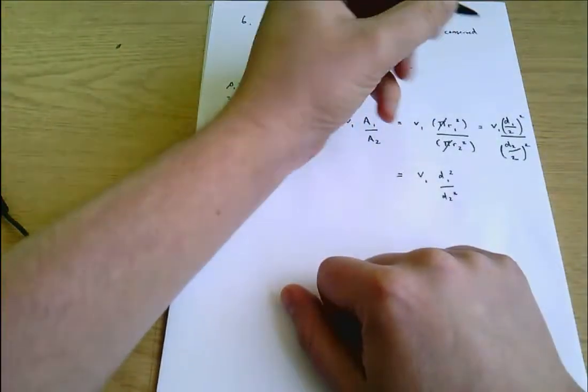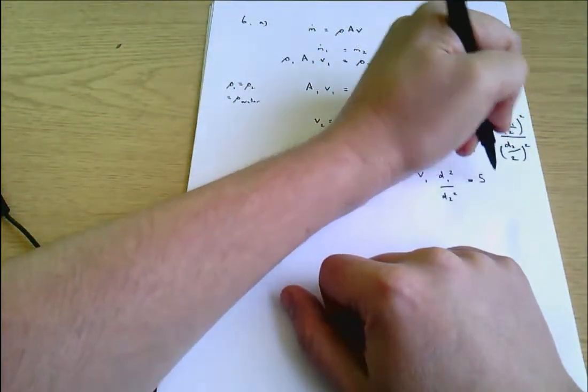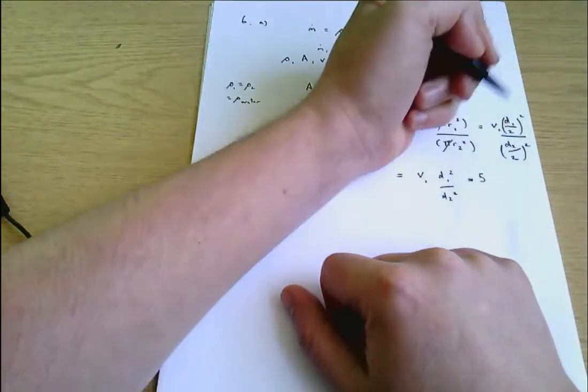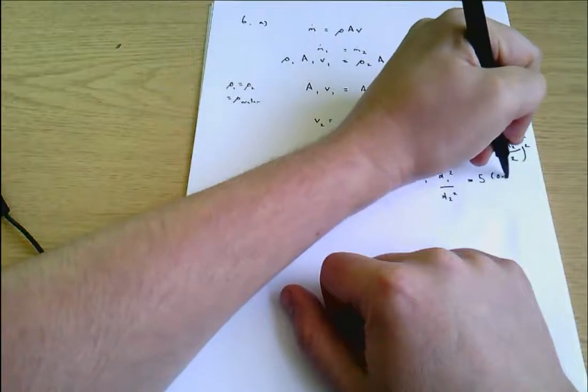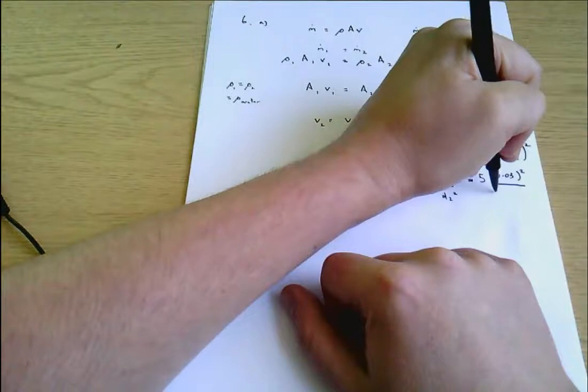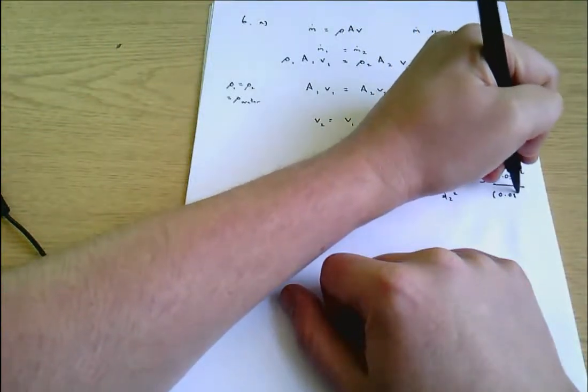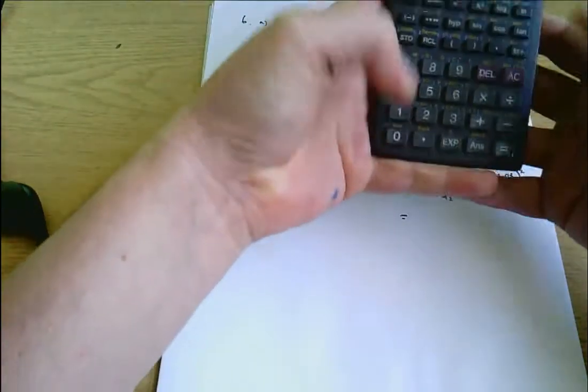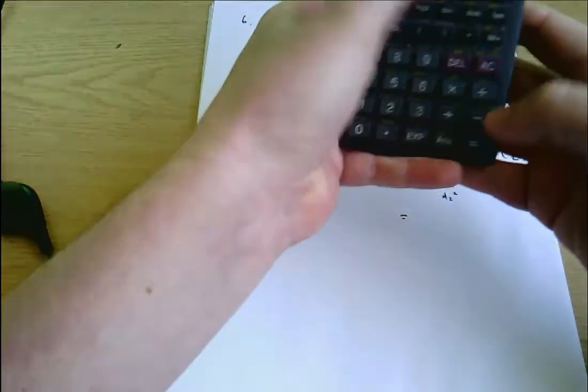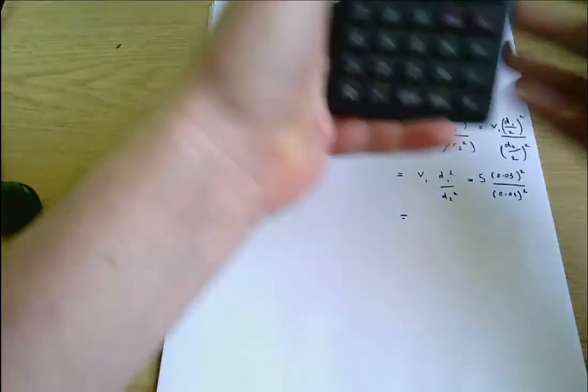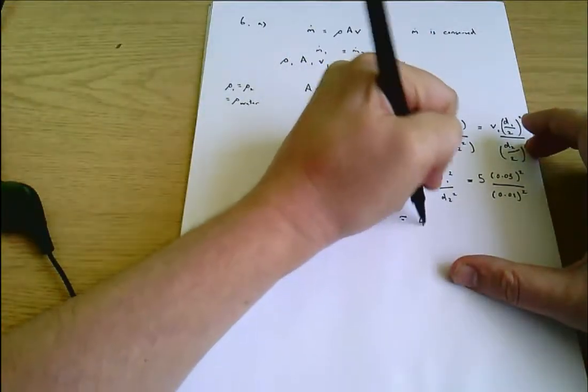And we can put some numbers into that. V1 is 5, D1 is 3 centimeters. I could keep everything in centimeters here. I'm going to just convert into meters because it's a good habit to have. So that's 0.03 meters squared divided by D2, which is 0.01 squared. And now I'm ready for the calculator. 0.03 squared divided by 0.01 squared times 5 equals 45 meters per second.